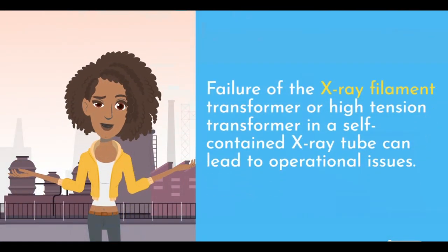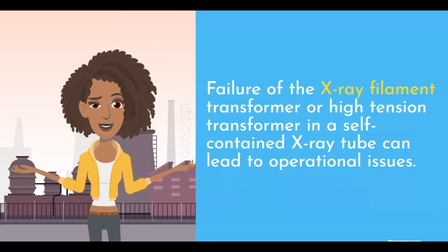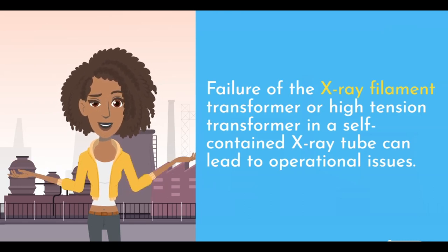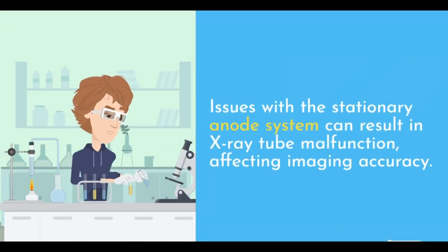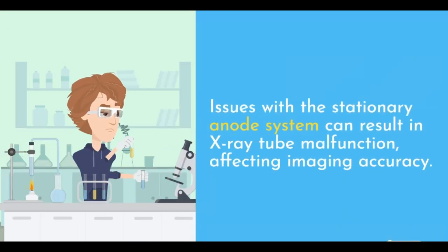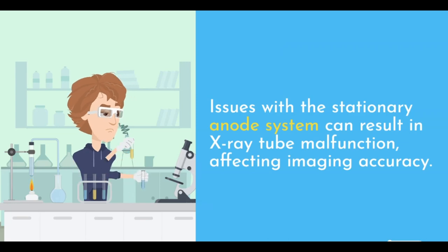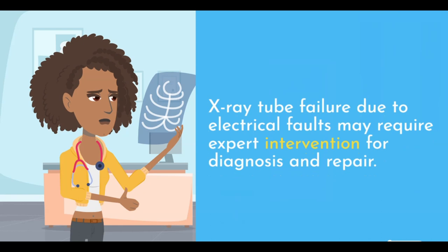Failure of the X-ray filament transformer or high-tension transformer in a self-contained X-ray tube can lead to operational issues. Issues with the stationary anode system can result in X-ray tube malfunction, affecting imaging accuracy. X-ray tube failure due to electrical faults may require expert intervention for diagnosis and repair.